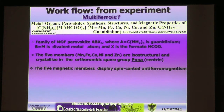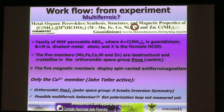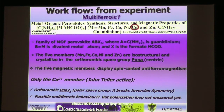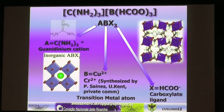We started from an experimental paper where a series of hybrid perovskites was synthesized: the A-site is the organic cation guanidinium, the B-site is a divalent metal atom, and the X-site is the formate/carboxylate ligand. Interestingly, only the Cu²⁺ member shows a polar space group, exhibiting some magnetic behavior at low temperature. The authors claimed it could be a new multiferroic hybrid perovskite, but they didn't measure the polarization — that was our starting point.